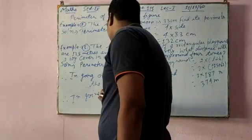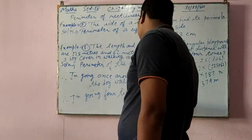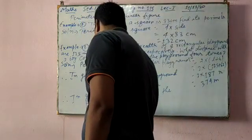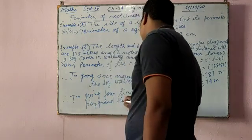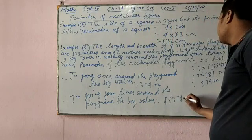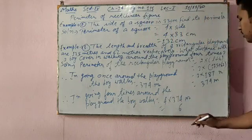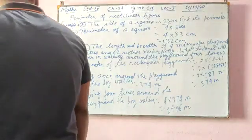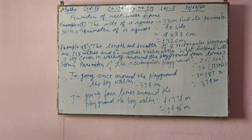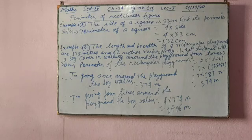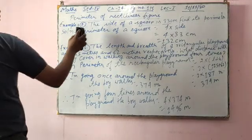in going 4 times around the playground, the boy walks 4 into 374 meters. 4 into 4, 16, 7 into 4, 28, 9, 4 into 3, 12 to 14. So 1400, sorry, 1496 meters that boy has walked when he has gone 4 times around the rectangular playground. Okay, sure.